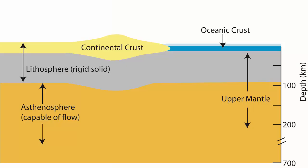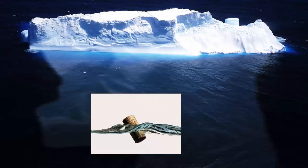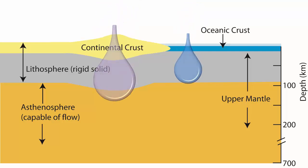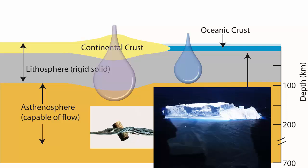The plasticity of the underlying asthenosphere allows the overlying lithosphere to sink into it, much like icebergs or wood floating in the water. The denser lithosphere portions that contain ocean crust will sink lower and be thinner. The less dense lithosphere that contains continental crust will be much thicker and ride higher as well as extend deeper, again like an iceberg. We call this process of lithosphere sinking into asthenosphere isostasy.